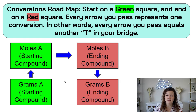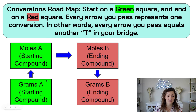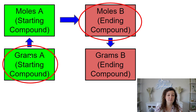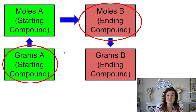Here's our roadmap. I mentioned the roadmap in my last video on mole to mole stoichiometry — I'll link that video below too. You should really start there before you do mole to grams. Today we are going to be starting on green and ending on red, going from grams to moles. Since we are passing one and then two arrows, that means we have two T's in our bridge — this is a two-step stoichiometry process.